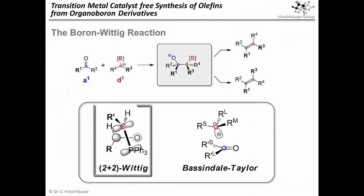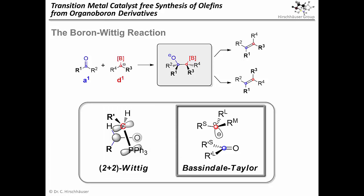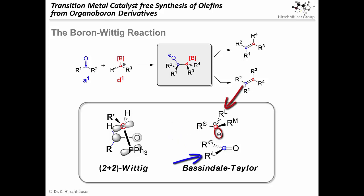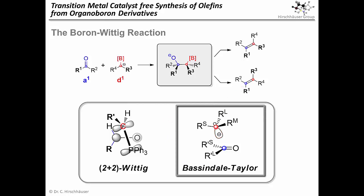For Wittig reactions, a transition state model of a 2+2 cyclic addition can be invoked. But since oxaboretanes are unlikely intermediates, this wouldn't make sense here. However, in the 1980s, Bässendale and Taylor described a simple model that works surprisingly well for the addition of many prochiral carbanions to prochiral carbonyl groups. The model postulates that the carbanion attacks in such a way that the smallest substituent of the carbanion is placed between the two carbonyl substituents, and that the remaining largest substituents avoid each other as much as possible. It should be mentioned that this simple model also predicts the outcome of the classic Wittig reaction correctly, so it should be taken for the simple heuristic that it is, and it might sometimes be right for the wrong reasons.